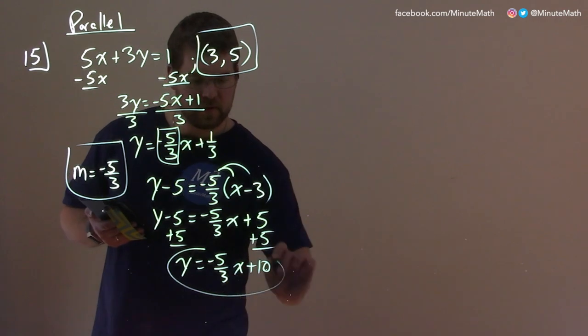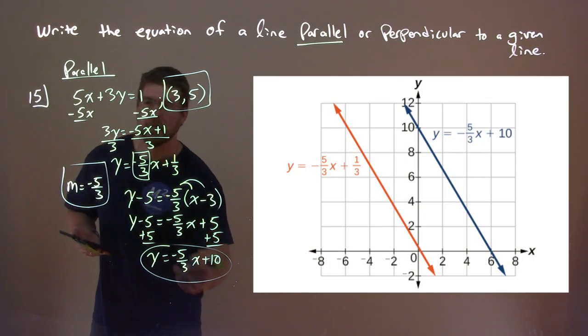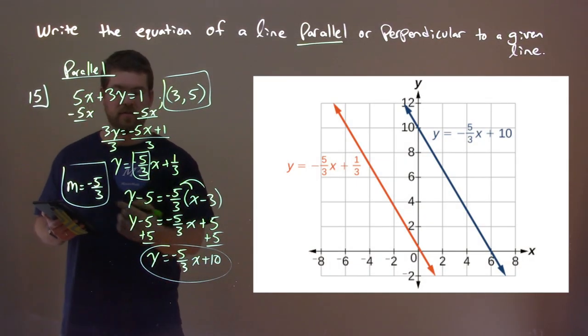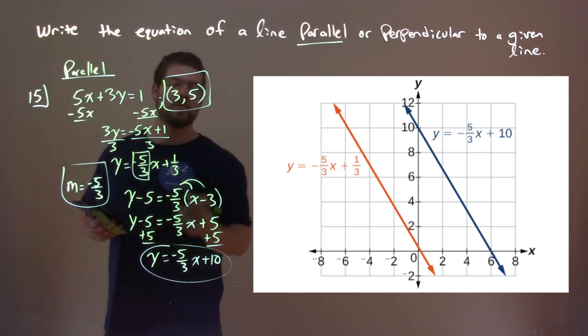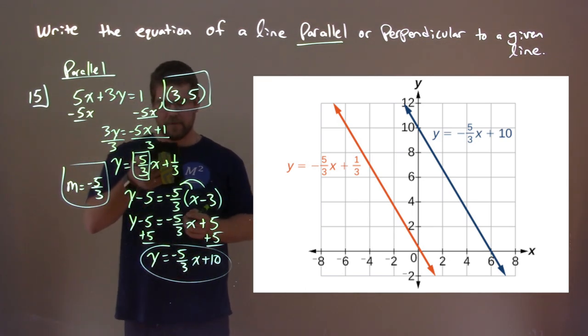We have y equals negative 5 thirds x plus 10, and this line that we found is parallel to this first line that they gave us. They share the same slope, and it goes to the point 3, 5.